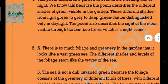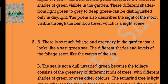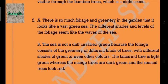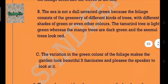Answer 2a: There is so much foliage and greenery in the garden that it looks like a vast green sea. The different shades and levels of the foliage seem like the waves of the sea. Answer 2b: The sea is not a dull, unvaried green because the foliage consists of greenery of different kinds of trees with different shades of green or even other colors. The tamarind tree is light green, whereas the mango trees are dark green and the simul trees look red.